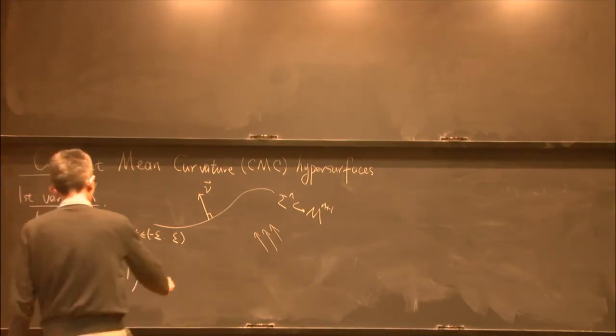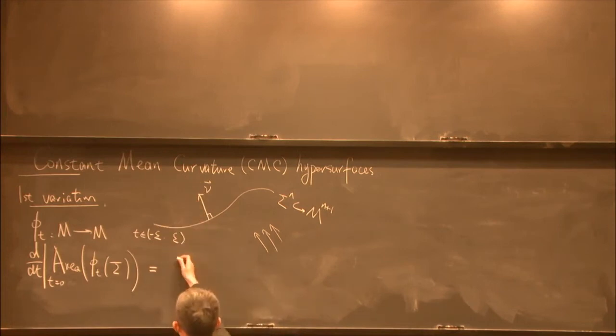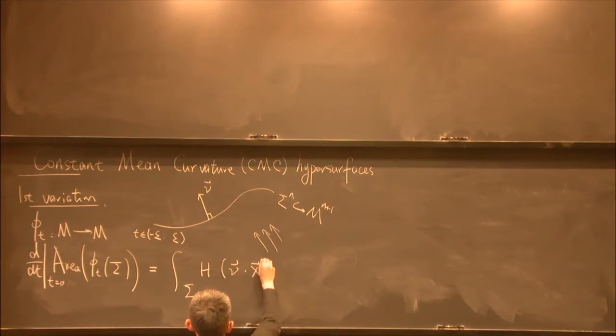So the first variation formula says that this is the integral of the hypersurface of this function times nu dotted with x, which I'll explain.